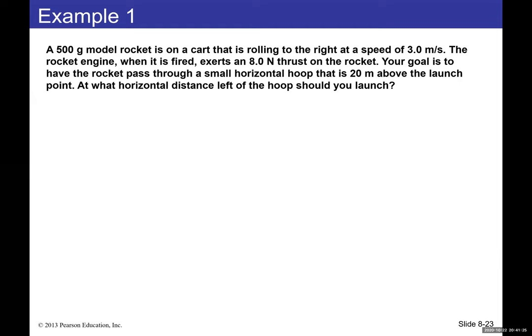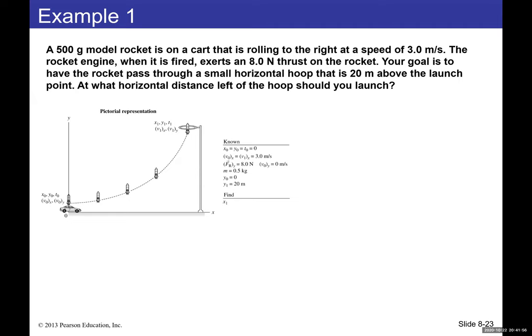Example: A 500-gram model rocket is on a cart rolling to the right at 3 m/s. When the engine fires, it exerts an 8 N thrust upward. The goal is to have the rocket pass through a horizontal hoop 20 m above the launch point. At what horizontal distance from the hoop should you launch?